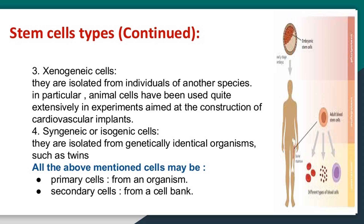Third, xenogeneic cells are isolated from individuals of another species. In particular, animal cells have been used extensively in experiments aimed at the construction of cardiovascular implants. Fourth, syngeneic or isogenic cells are isolated from genetically identical organisms, such as twins. All of the above-mentioned cells may be primary cells from an organism or secondary cells from a cell bank.